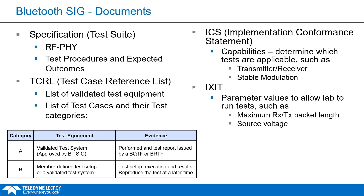There are four main documents needed to perform RFI testing. The first and most important is the RFI specification, which is a test suite. It takes requirements from the core specification and turns them into test cases to verify compliance. These test cases include the test procedures, processes, and expected outcomes, which serve as pass criteria.